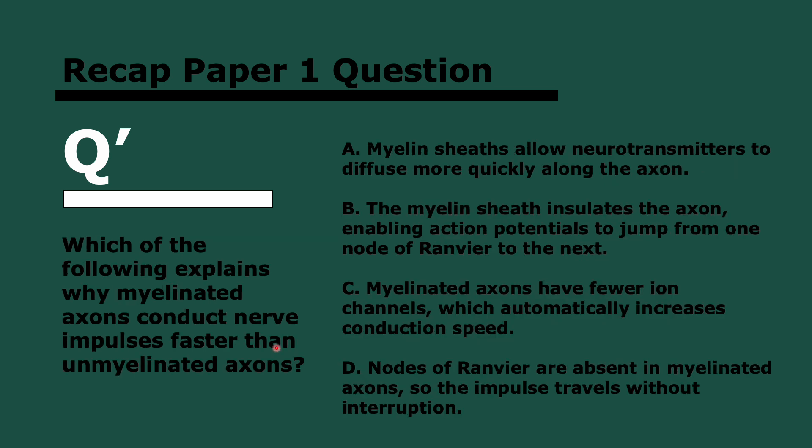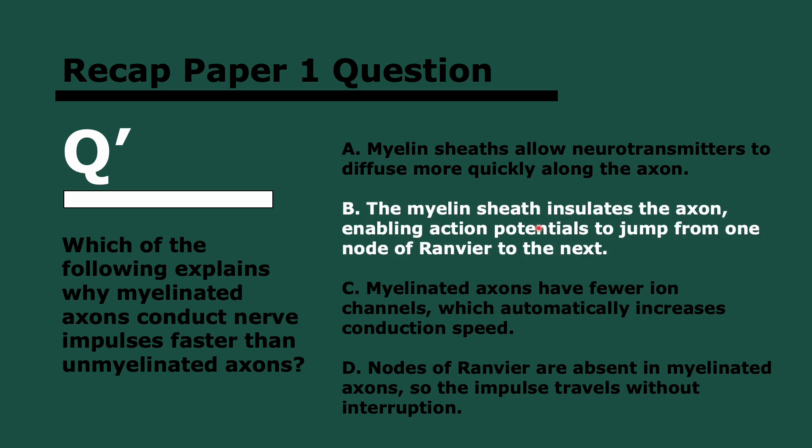Next question. Which of the following explains why myelinated axons conduct nerve impulses faster than unmyelinated axons? Again, pause now to think. And in three, two, and one, it's B. So the myelin sheath insulates the axon, those Schwann cells, and it enables action potentials to jump from one node of Ranvier to the next, because that's where all the channels are going to clump. It doesn't have anything to do with neurotransmitters. It doesn't have to do with having less ion channels. That would do the opposite.